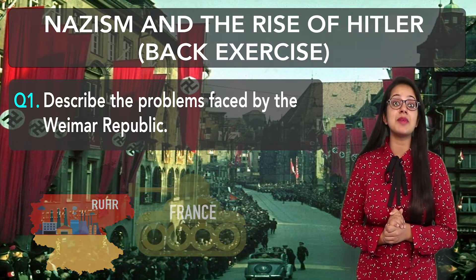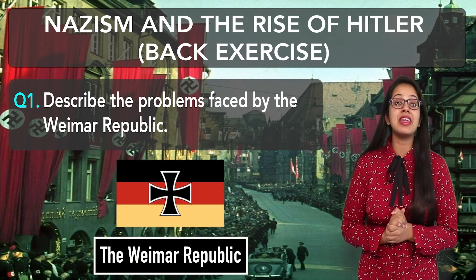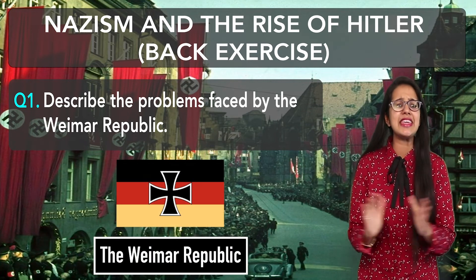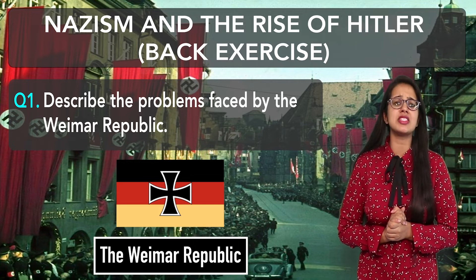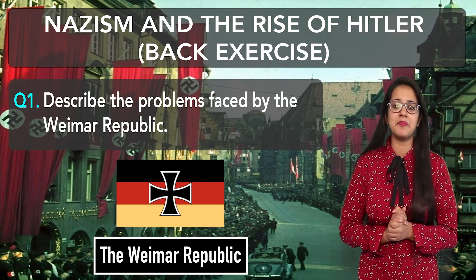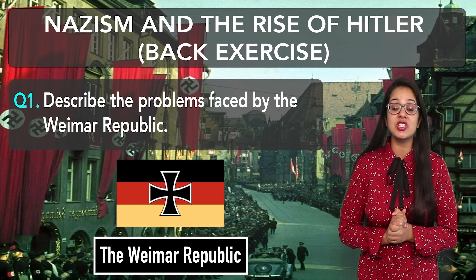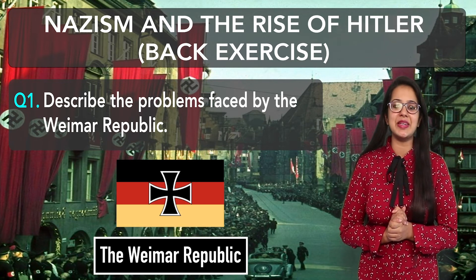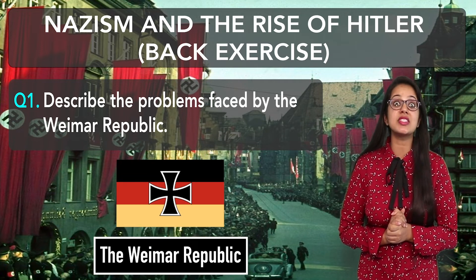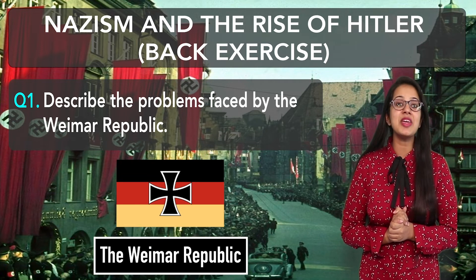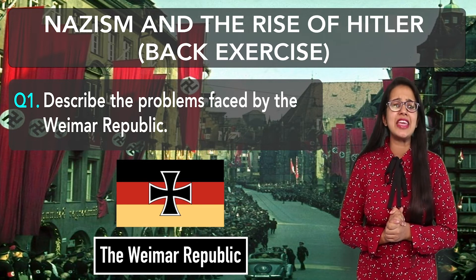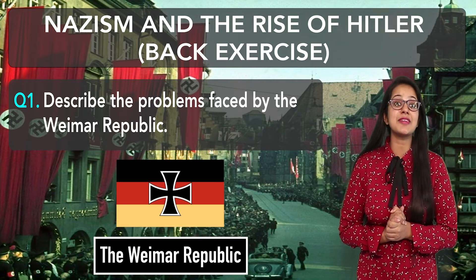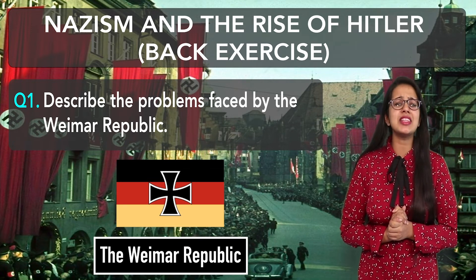The Germans faced a lot of political instability. The Weimar Republic had never been accepted by the Germans. In this situation, the President had a lot of power, and the democratic parliamentary system was undermined.